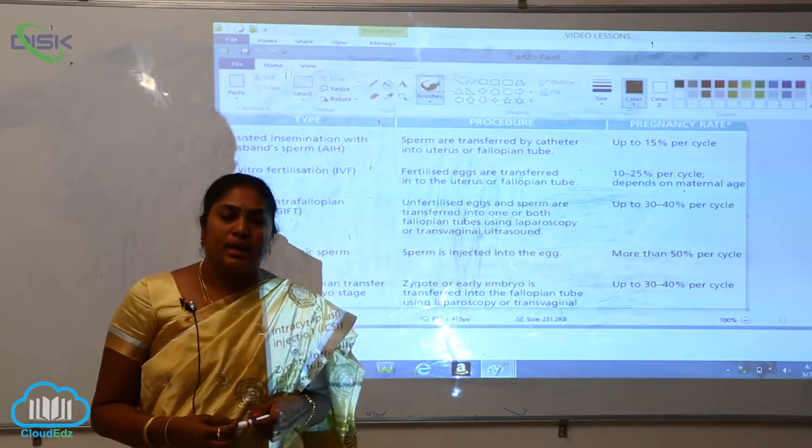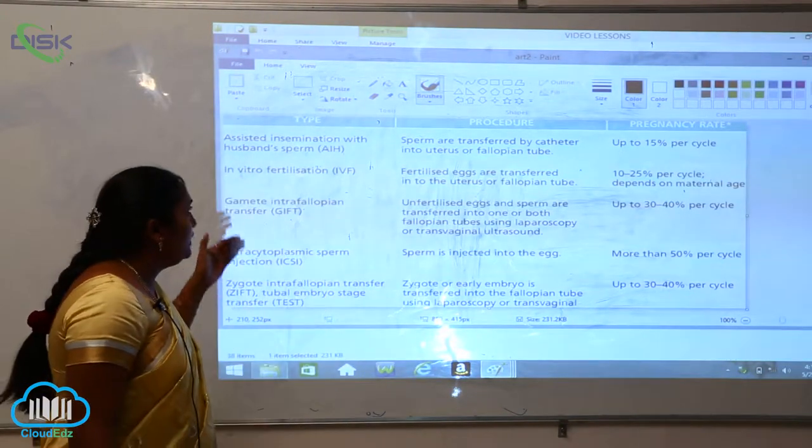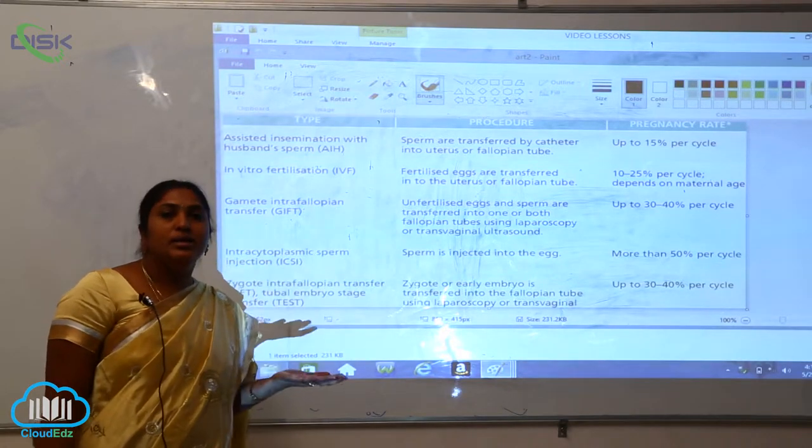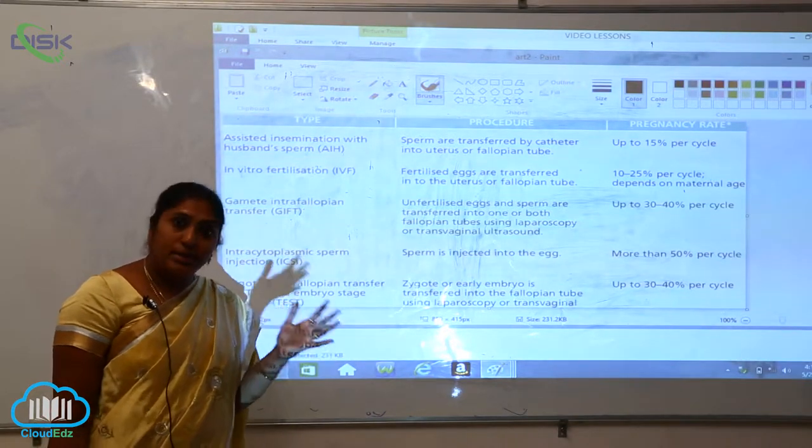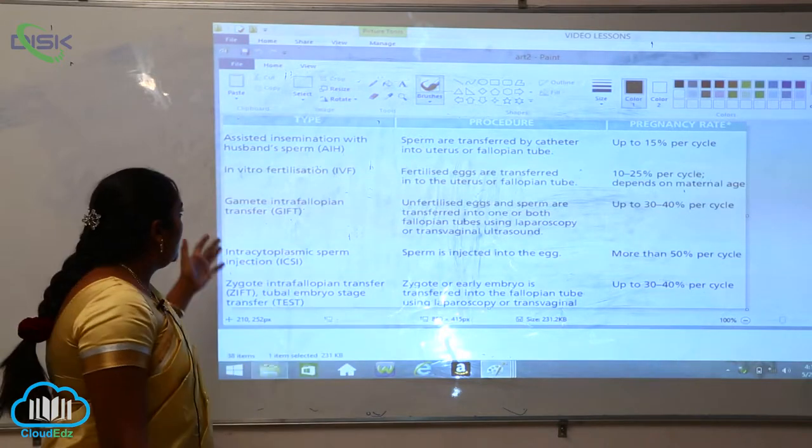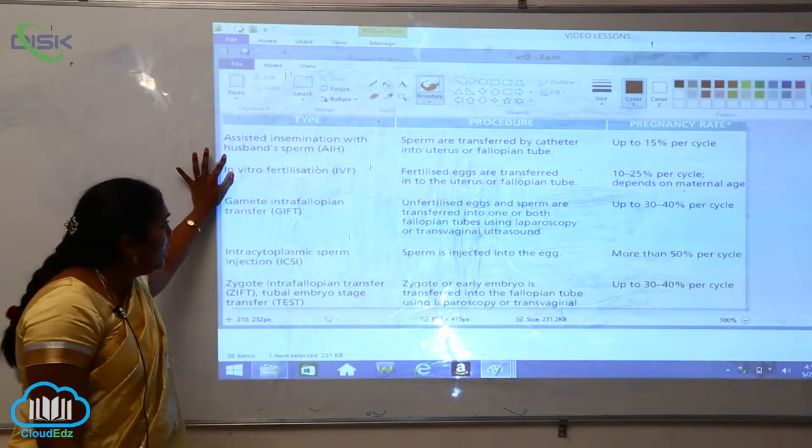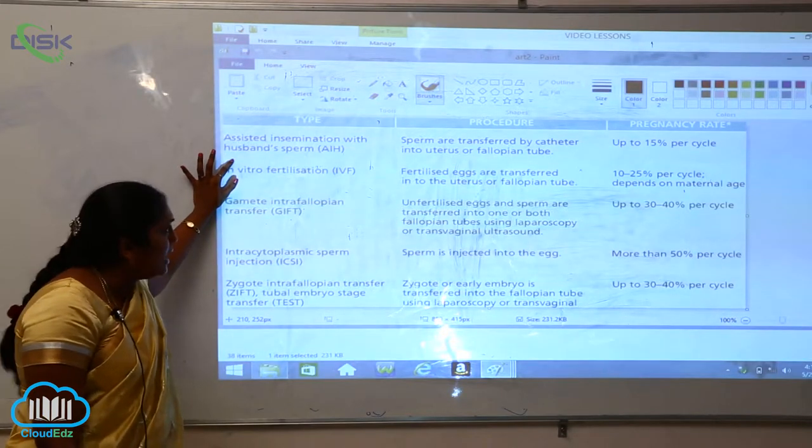In assisted reproductive technology, there are different types of procedures and the actual pregnancy rates you can see. The first one is assisted insemination with husband's sperm, which we call AIH.